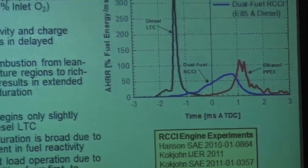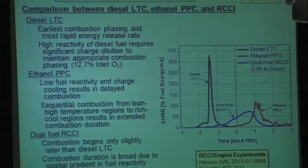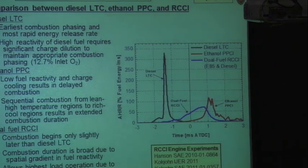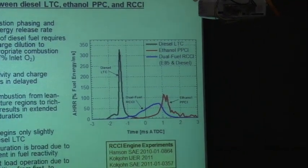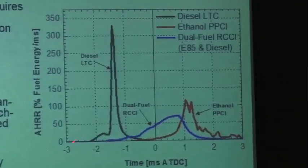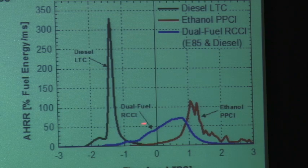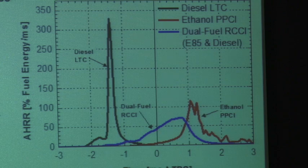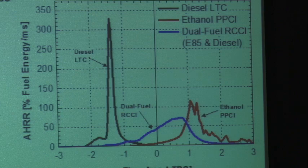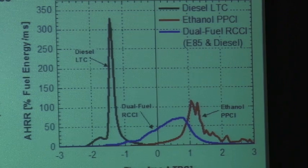Looking at the differences in the heat release event — apparent heat release as a percentage of fuel energy versus time in milliseconds — for diesel you see the premixed burn and then the diffusion burn. For ethanol, there's a long delay followed by an essentially HCCI-type combustion. Whereas with RCCI, you have a prolonged burn because you're essentially burning one fuel, then the mixture of the two fuels, and then finally the second fuel by itself. This gives you a lot of control over the combustion process, even with different fuels.